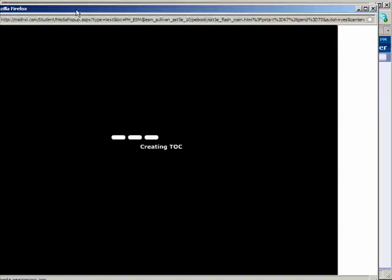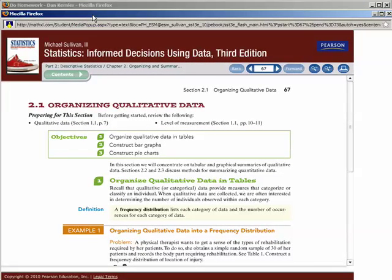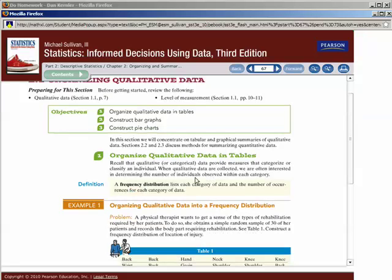This will be a digital version of the textbook. Now it isn't the full textbook, it's just the particular section that we're working on. So if you want to go to a particular section, say later in the textbook, you have to go back to that homework section and then open up the textbook through Math Excel.